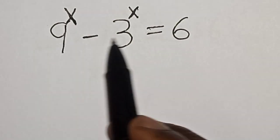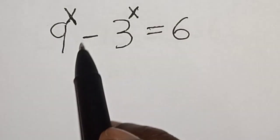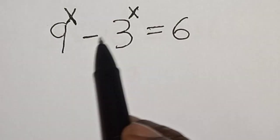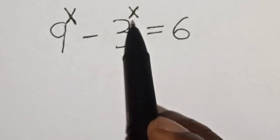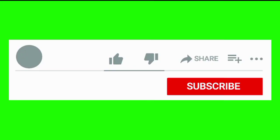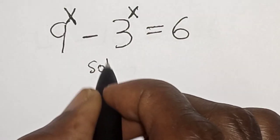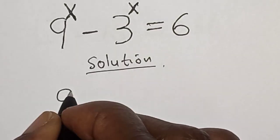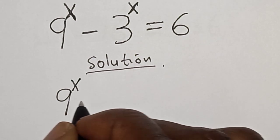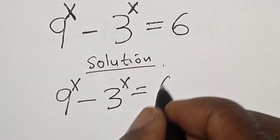Hi everyone, welcome to my class. In this class we want to find the value of s from the equation: 9 raised to power s minus 3 raised to power s is equal to 6. Please don't forget to like, share, comment and subscribe. Solution: we have the given equation 9 raised to power s minus 3 raised to power s is equal to 6.